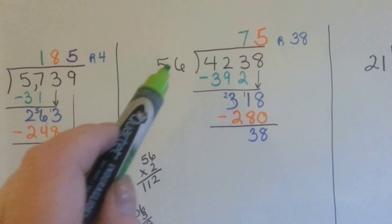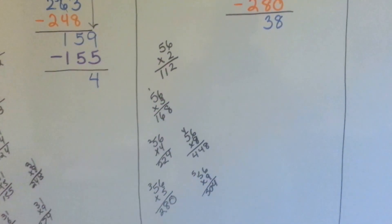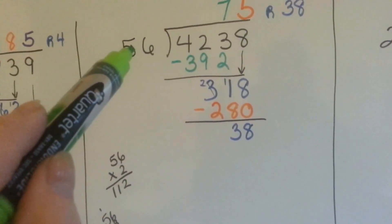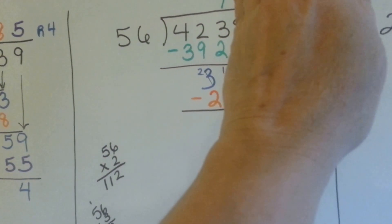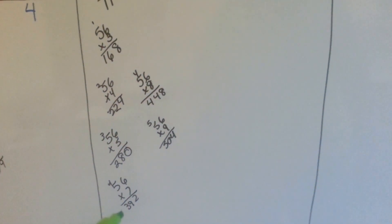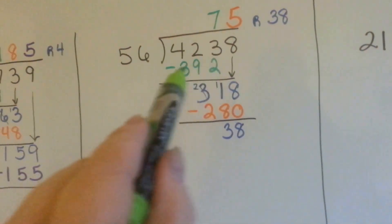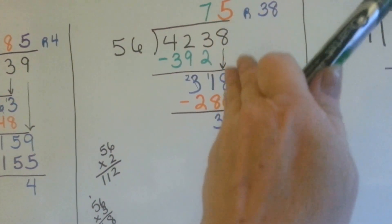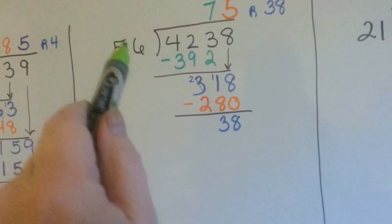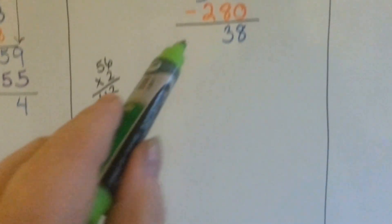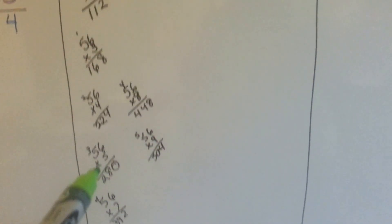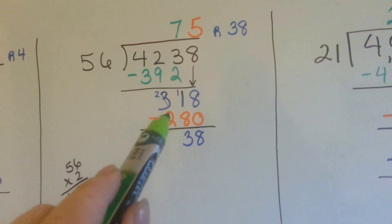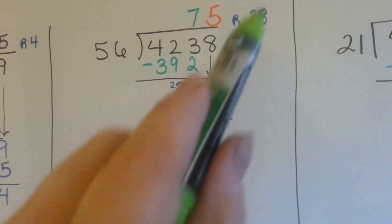Now I did it again — 56 going into 4,238. So I did 56 times 2, 3, 4, 5, 6, 7, 8 on the side. Now I already know all my answers. 56 can't fit into 4, it can't fit into 42, so it's going to go into 423. By doing 56 times 7, I already figured it was 392. I put 392 there, subtract, and get 31. Then the 8 comes down, giving us 318. I look through my multiplication for something around 318 but less — 56 times 5 is 280, that works. I put the 5 up there, write 280, subtract, and get 38. 56 can't fit into 38, so that's my remainder.